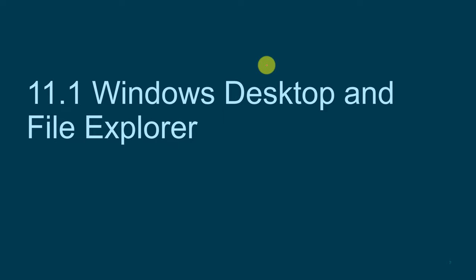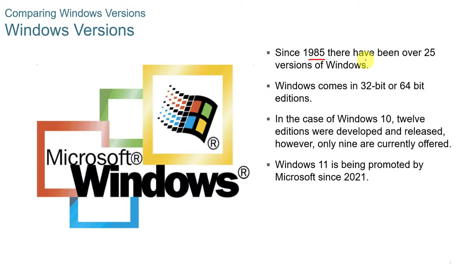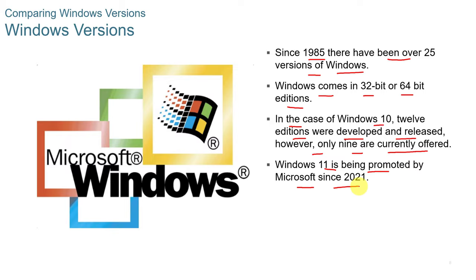Windows Desktop and File Explorer. Since 1985, there have been over 25 versions of Windows. Windows comes in 32-bit or 64-bit editions. In the case of Windows 10, 12 editions were developed and released, though only nine are currently being offered. Windows 11 is currently being promoted by Microsoft since 2021.